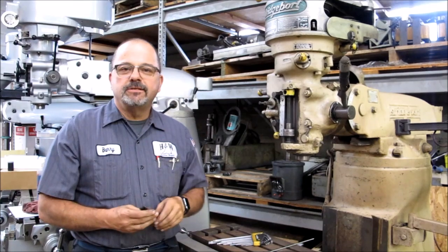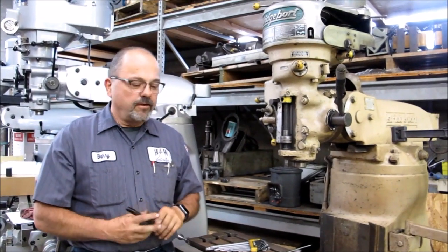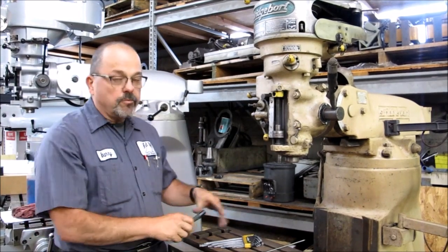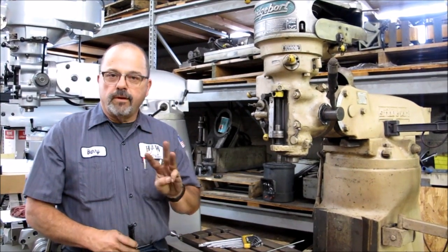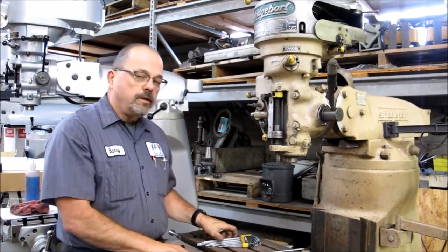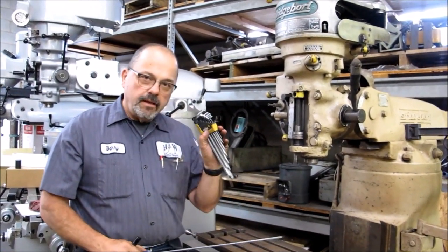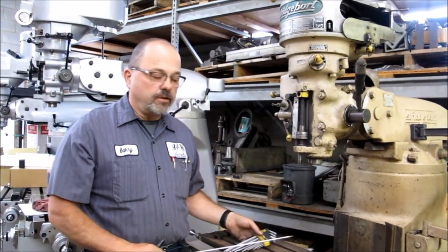Hello everybody, this is Barry from H&W Machine Repair, again doing another video for you. Today we are going to be adjusting the gibs in a Bridgeport Series 1. There are three gibs to be adjusting. You will need a screwdriver, a long one is best, and you may need Allen wrenches depending on your configuration.